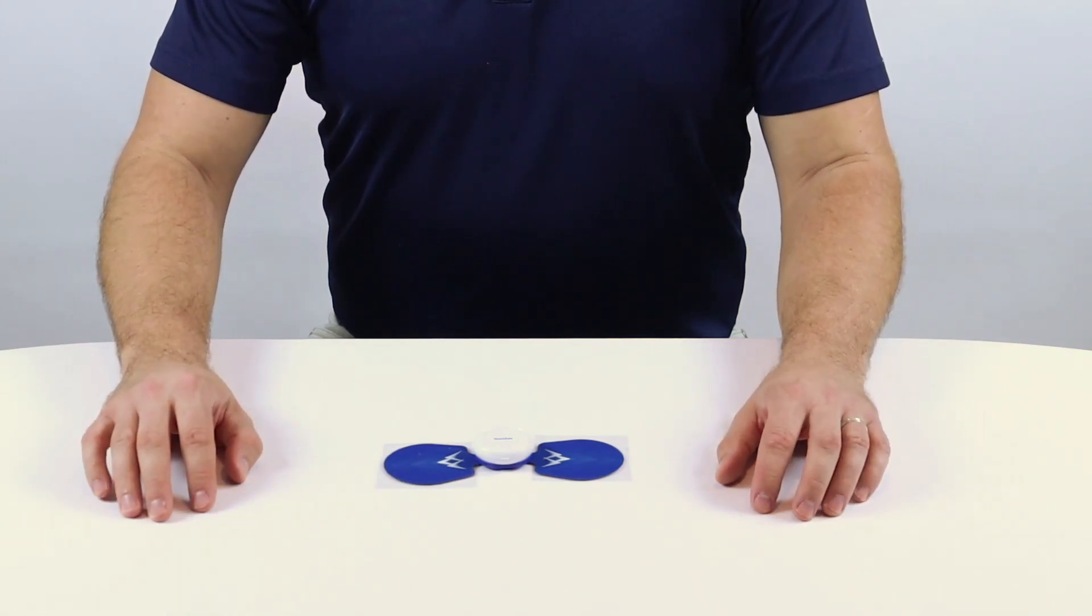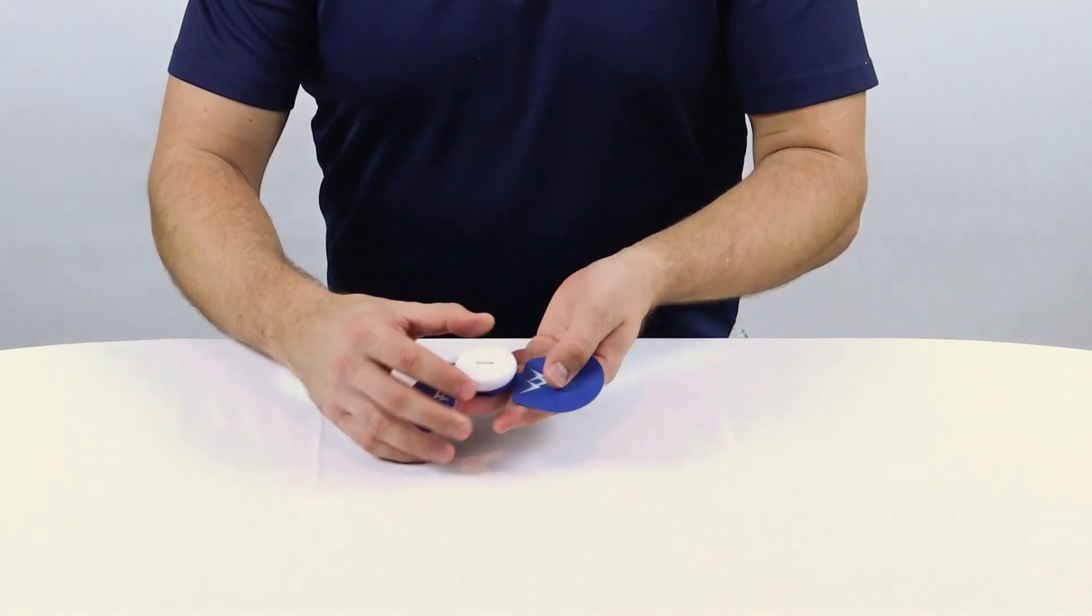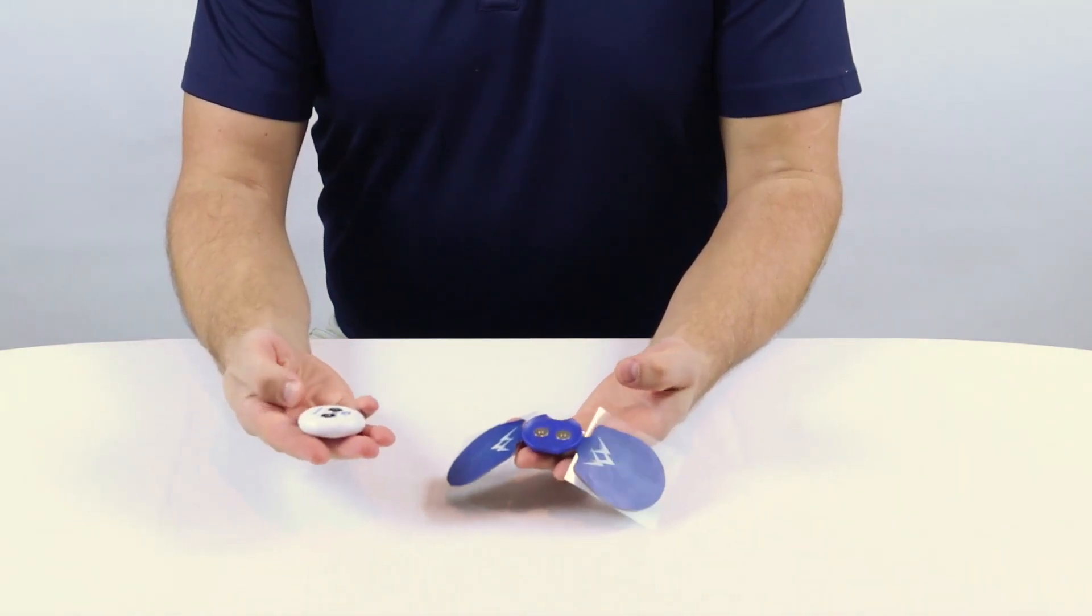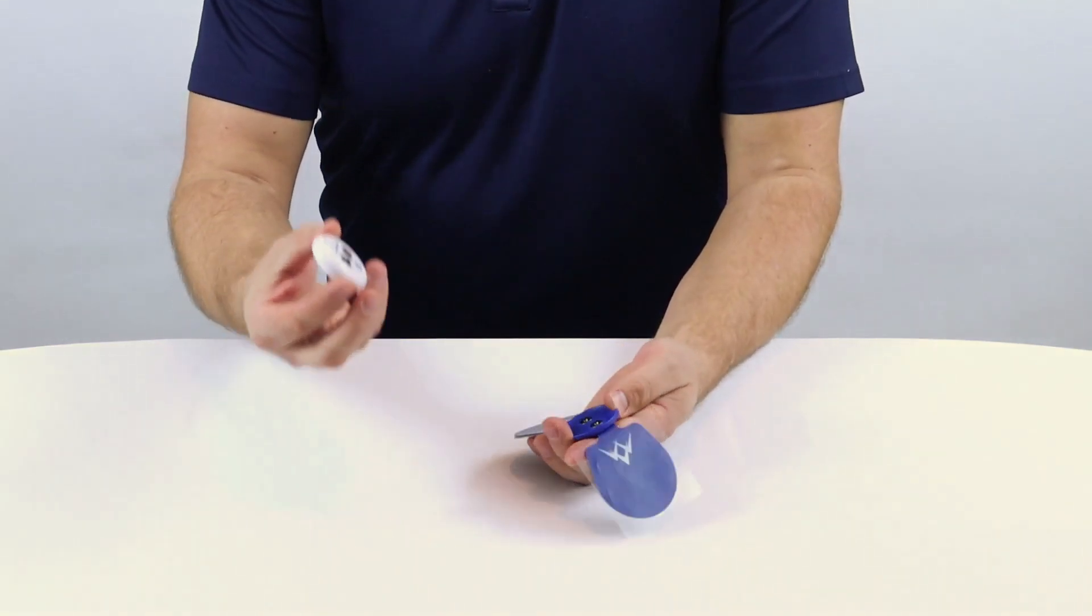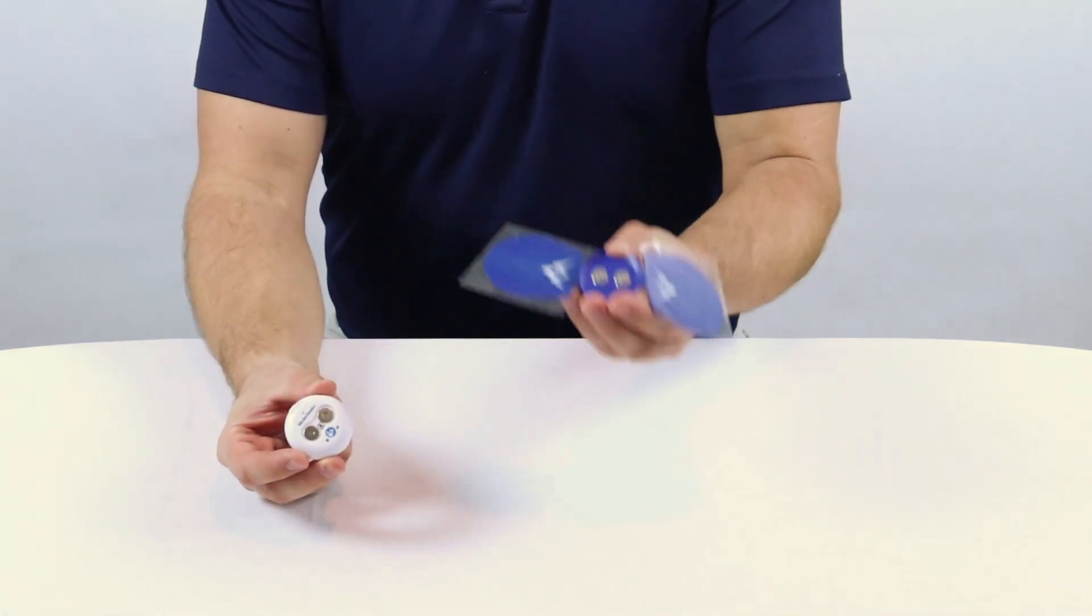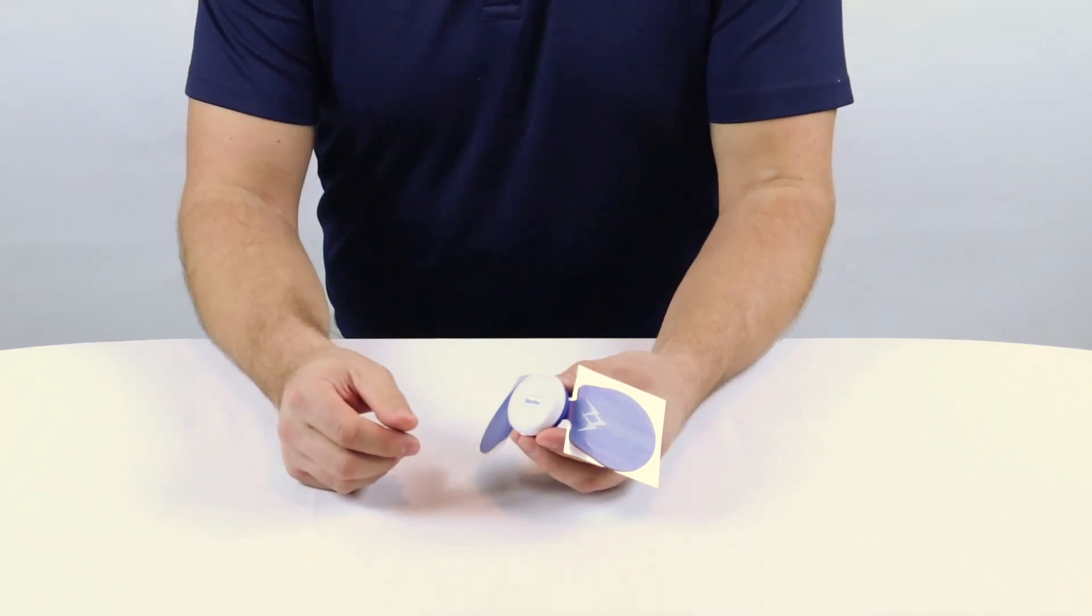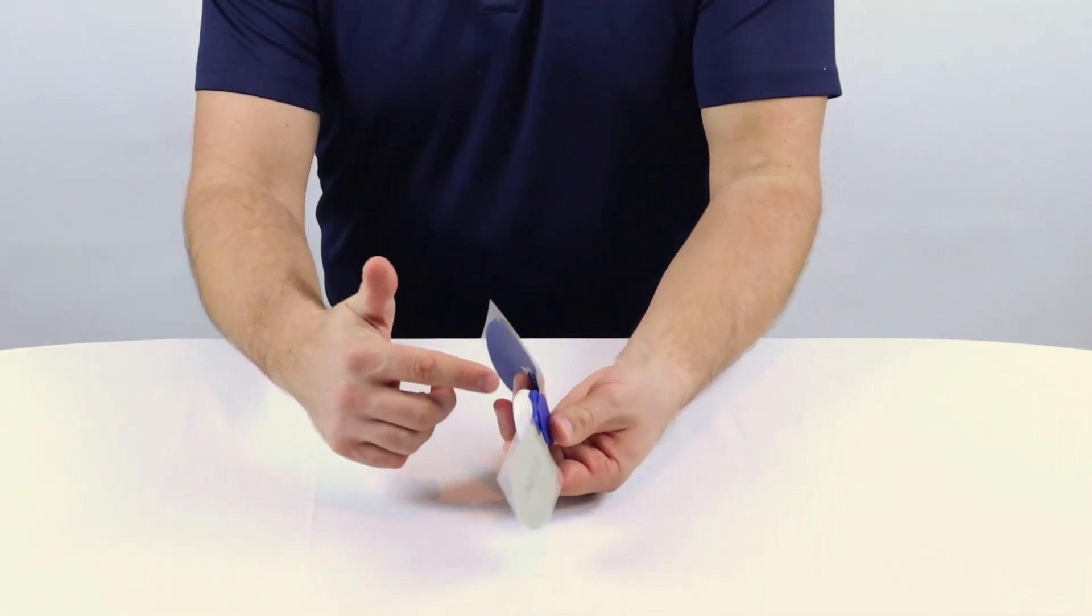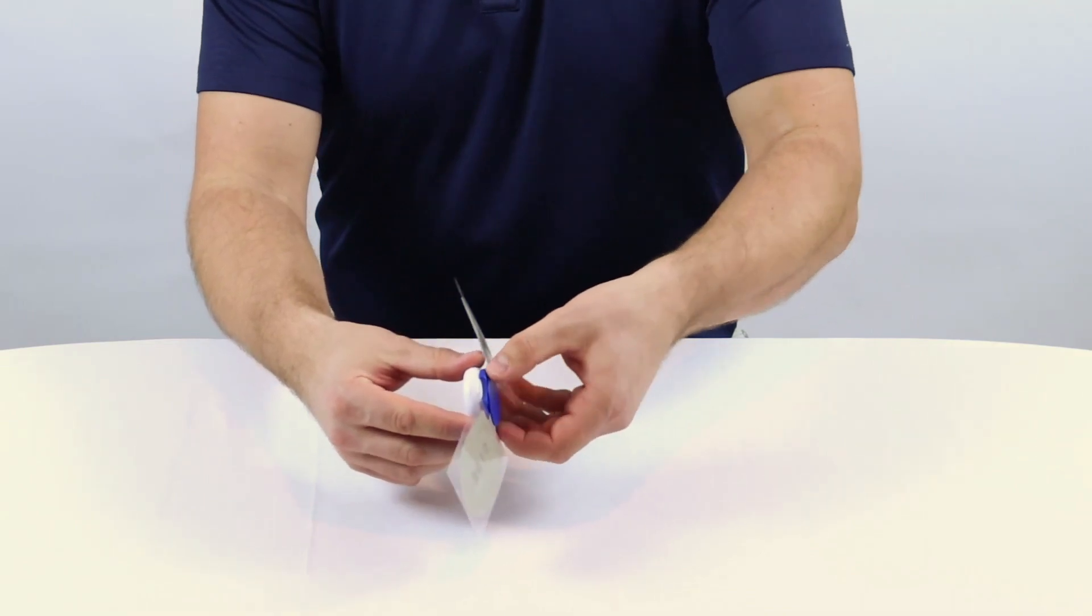One common question we get about the Sabostim Go is, how do I disconnect the electrode wings from the Sabostim Go? The reason you'd want to disconnect the wings from the controller unit is so that you can charge the device. The Sabostim Go is made up of two parts, the controller unit and the wings. These are held together by magnets. To easily separate the two parts, insert your fingernail into the space where the blue of the wings meets the white of the controller unit and pull apart.